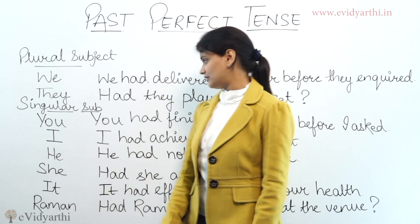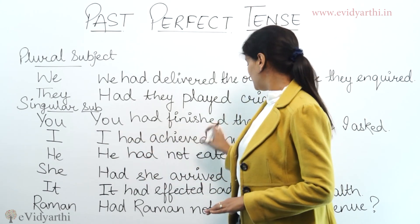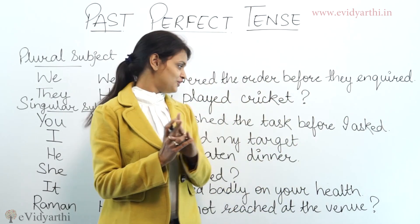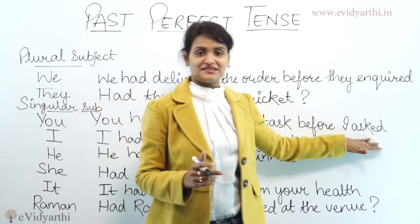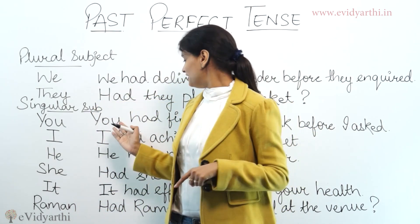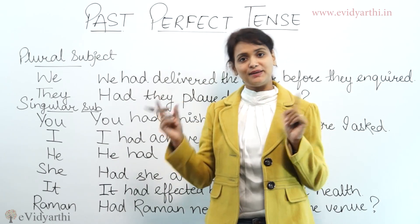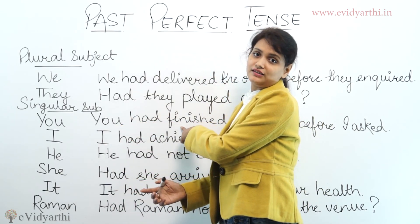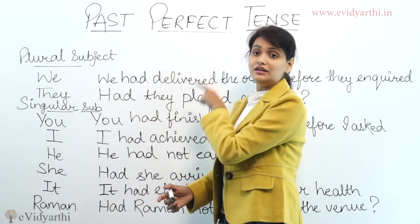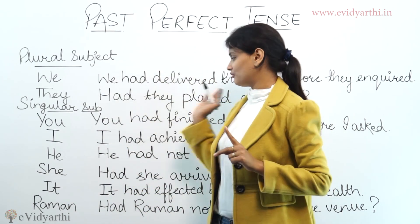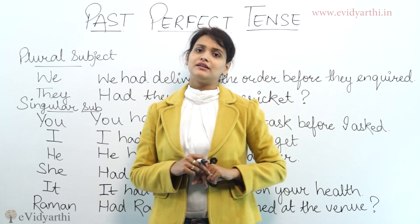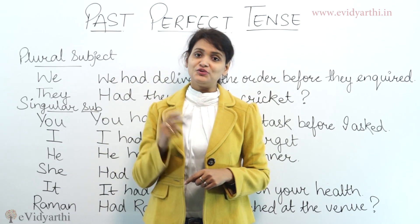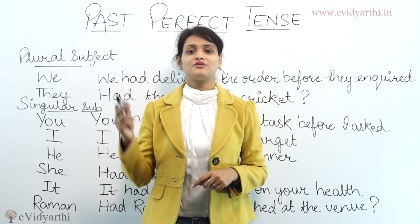Let's look at more examples. 'You had finished the task before I asked.' Here there are two action verbs: finish and ask. The task that happened first is 'you had finished' — you completed the work before I even asked. That's why it uses past perfect. Another example: 'You had reached the station before the train left.'